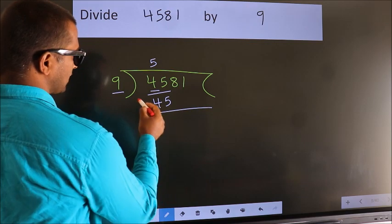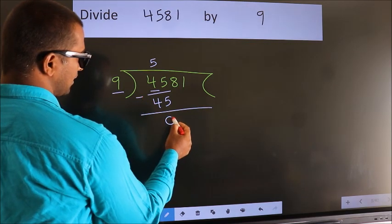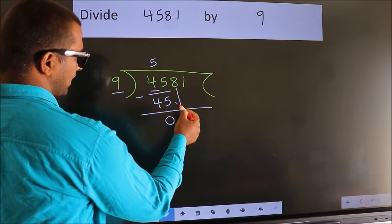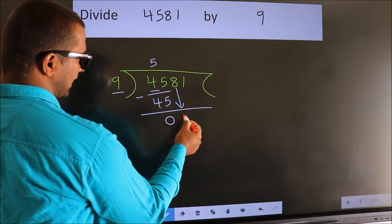Now we should subtract. We get 0. After this, bring down the beside number. So 8 down.